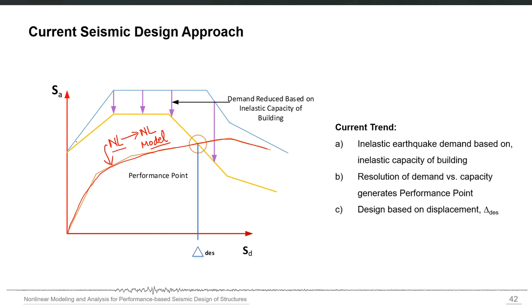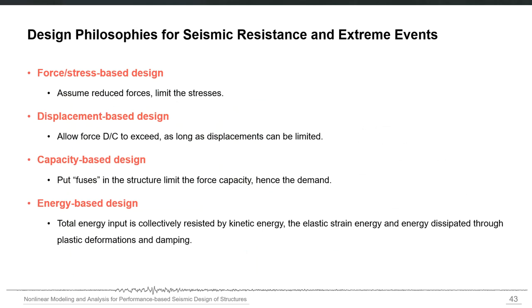You have the force demand, and you have the actual non-linear curve. You modify the force demand based on the inelastic properties of your structure or damping, for example, and then you arrive at a compromise point between demand and capacity that utilizes the full non-linear capacity on both the force side and the displacement side. Essentially, both the reserve strength and the reserve ductility of the actual structure are used. The current seismic design approach is thus based on the actual non-linear behavior and inelastic response of the structure.